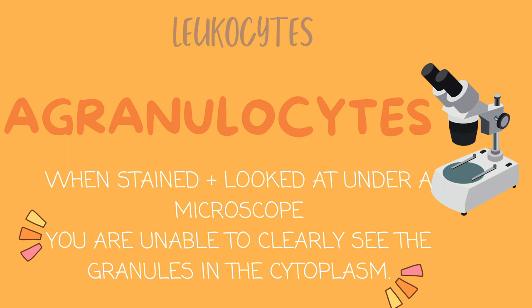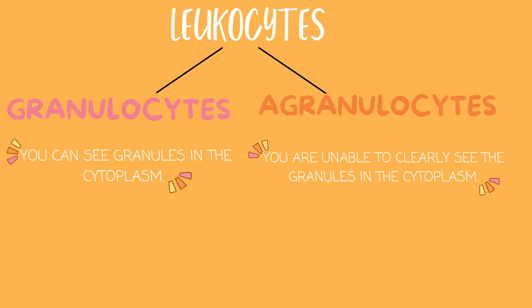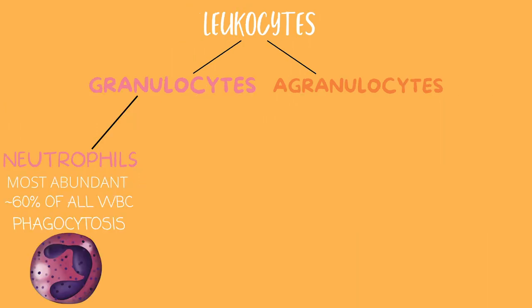So just add an A in front of granulocyte and that means without granules. Under leukocytes, we have two main types: the granulocytes and the agranulocytes. Under granulocytes, we have neutrophils. They are the most abundant white blood cell and most aggressive. They undergo phagocytosis, which is a process in which they surround, ingest, and destroy potentially harmful substances.